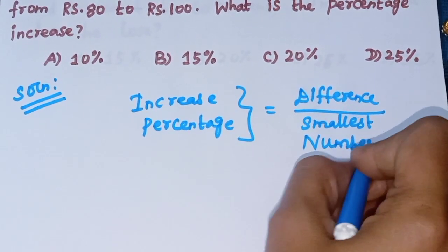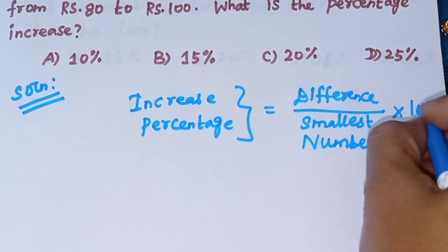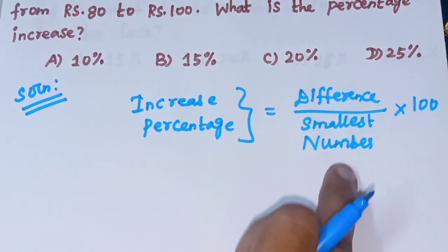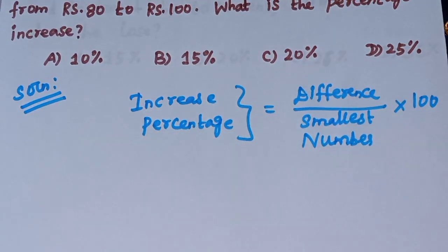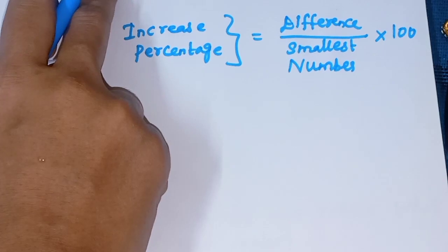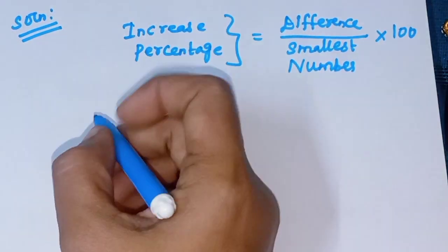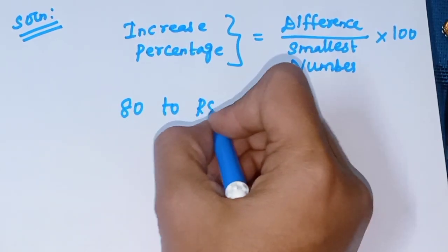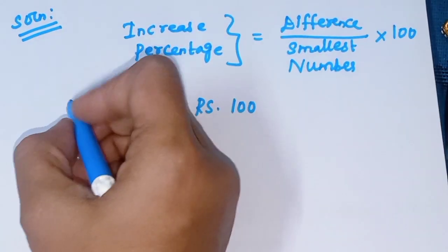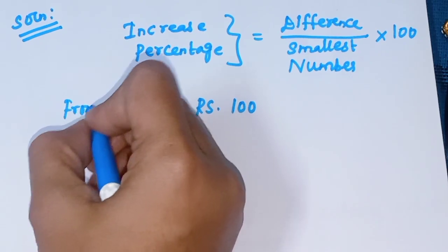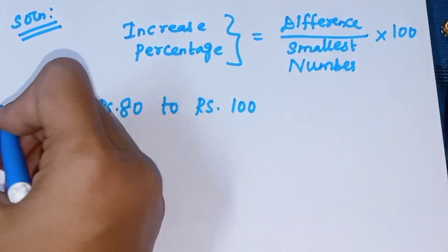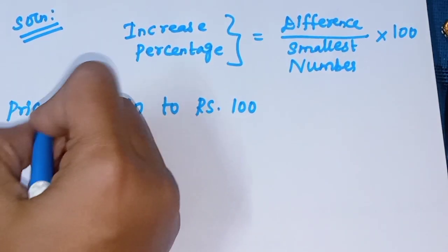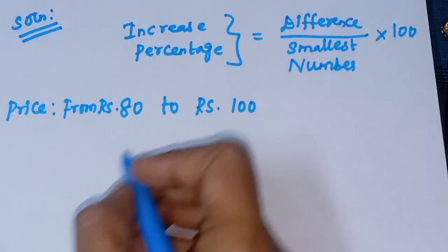Increase percentage equals difference divided by smallest number into 100. The price of the product increased from Rs. 80 to Rs. 100. This is the difference.